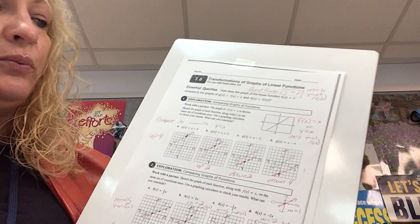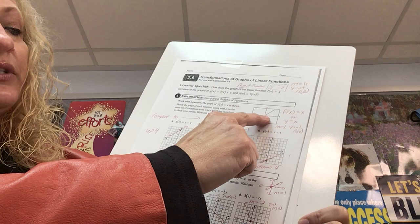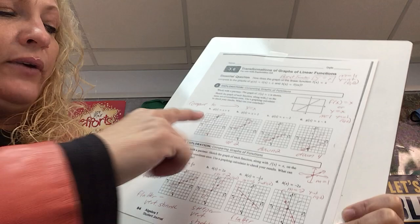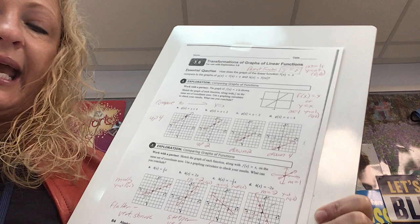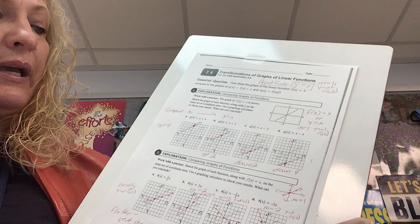Let's take a look at this handout and look for patterns. Here's our parent graph, y = x — y-intercept is 0, slope of 1. I'm going to encourage you to stop the video and graph a, b, c, and d, and then start the video again. Let's talk about how the parent graph was changed.